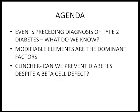Modifiable elements, if any, should be what is dominant in the pathogenesis, because there is something you can do about it. And the clincher is: can we prevent diabetes despite a beta cell defect? That should tell you what is more dominant, at least in some percentage of patients. If it is doable for some, it is probably doable for all.